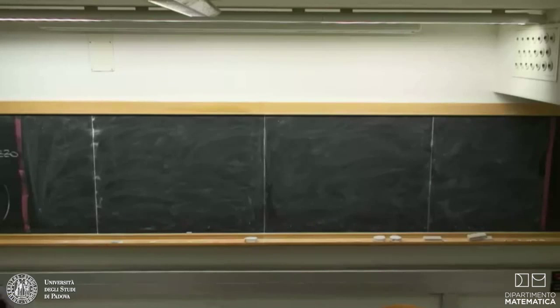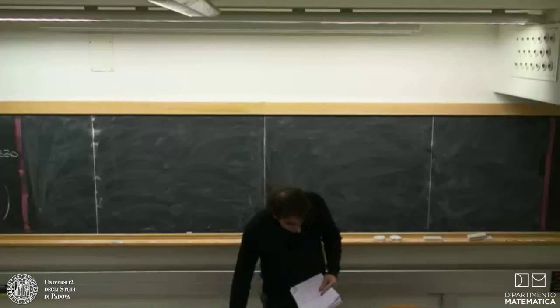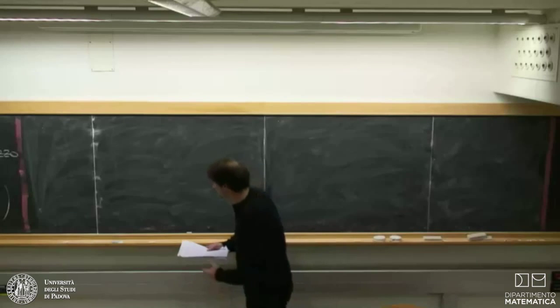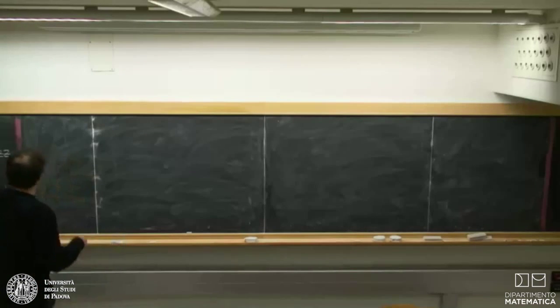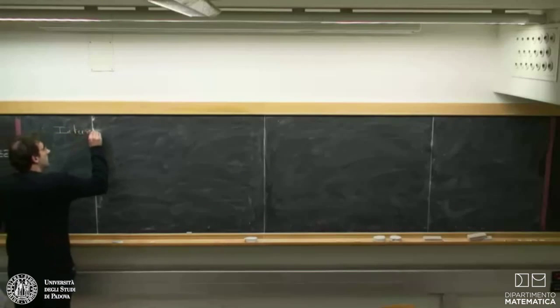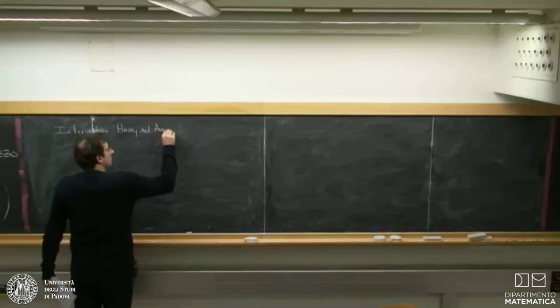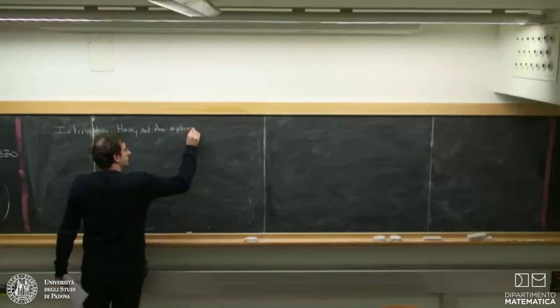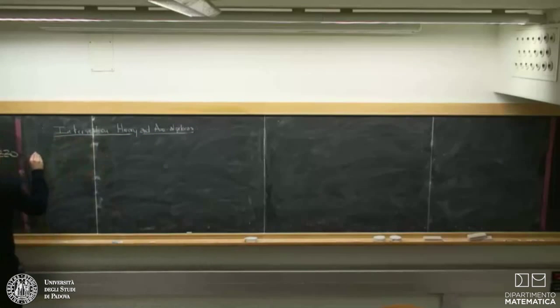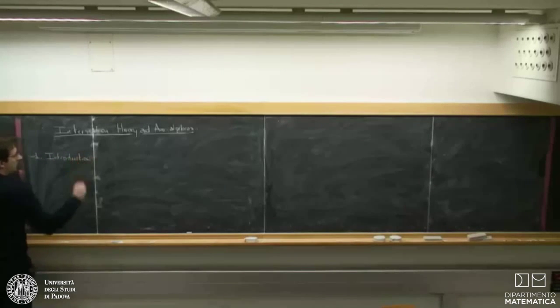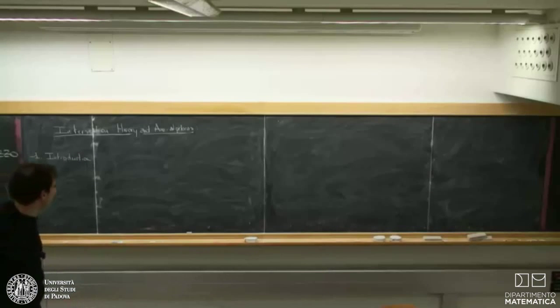So, it's a pleasure to be here again, and thank you very much for the invitation. What I'd like to explain is that infinity algebra may appear in classical intersection theory for algebraic varieties over those fields. I'll start by recalling some basic things about intersection theory.